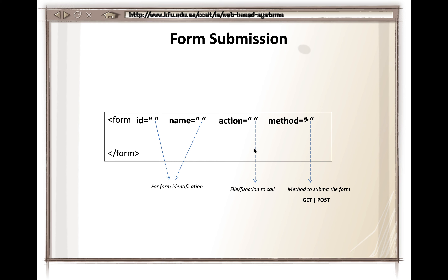Inside the form tag, to assign a unique identification for a form we give it an id and a name. The id is something we may use in CSS, but the name attribute — as seen in the previous session on JavaScript form handling — is really important. When we want to select a form element, we can use document dot form-name dot element-name.